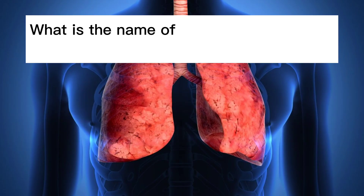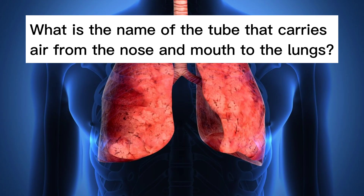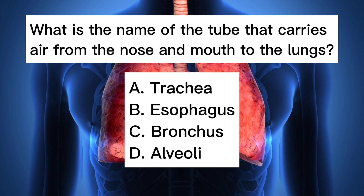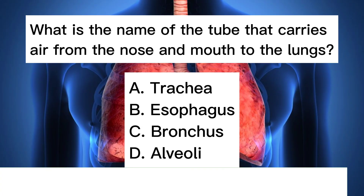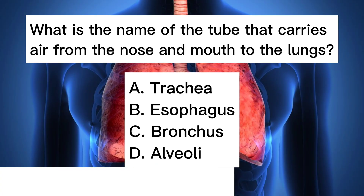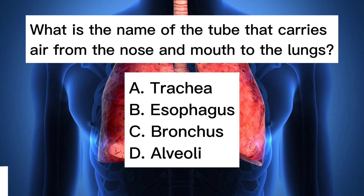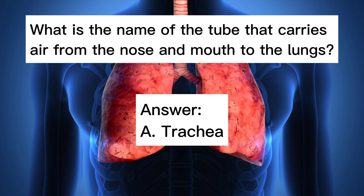What is the name of the tube that carries air from the nose and mouth to the lungs? A. Trachea. B. Esophagus. C. Bronchus. D. Alveoli. Answer: A. Trachea.